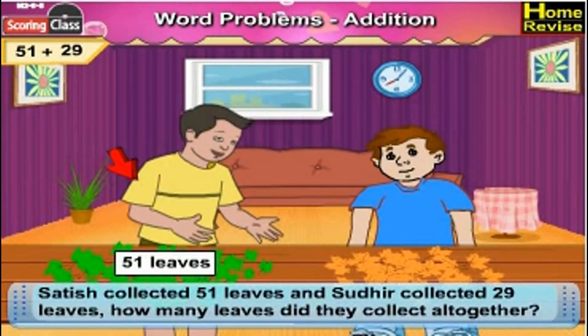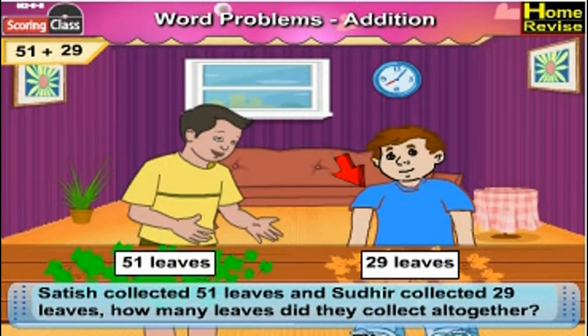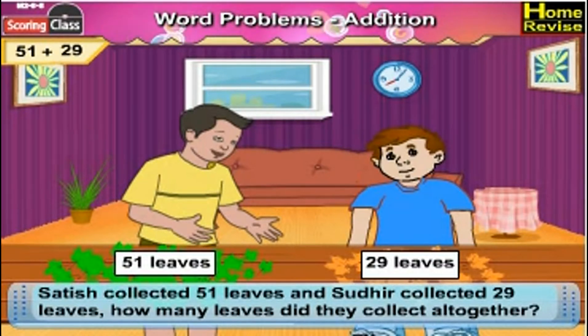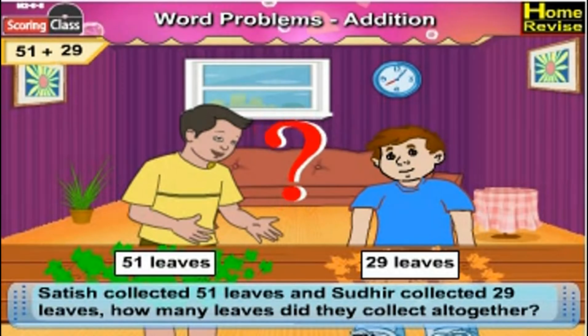The next is 51 plus 29. Satish collected 51 leaves and Sudhir collected 29 leaves. How many leaves did they collect altogether?